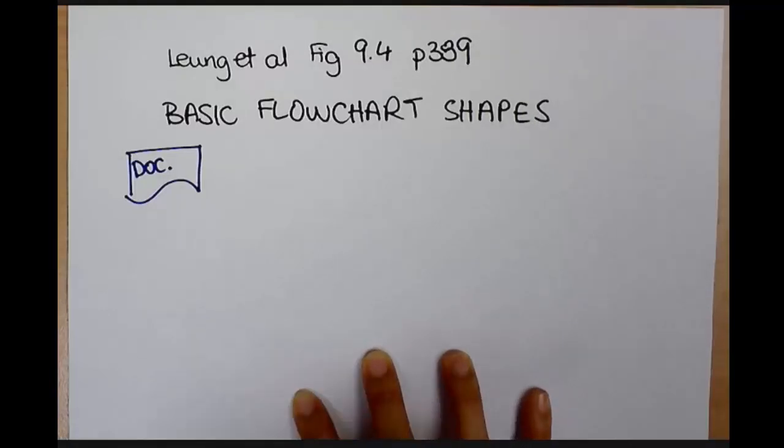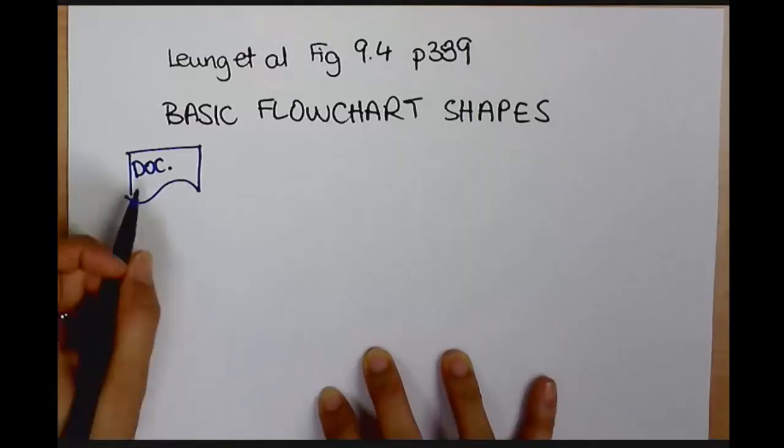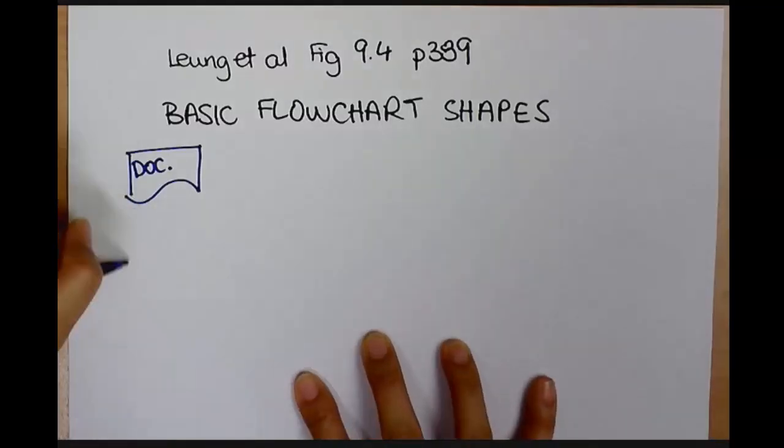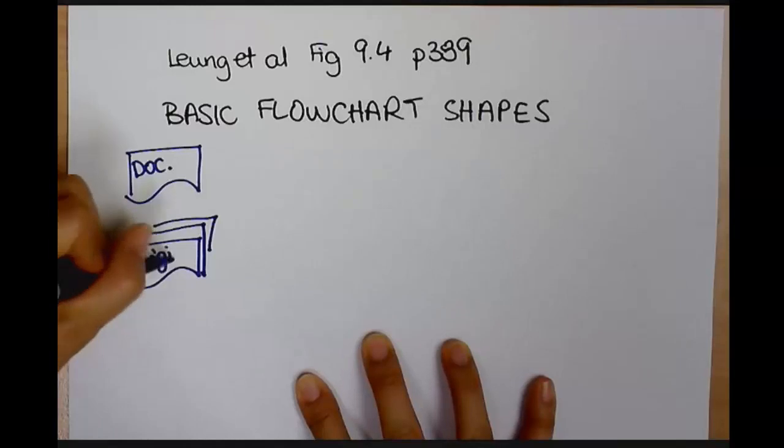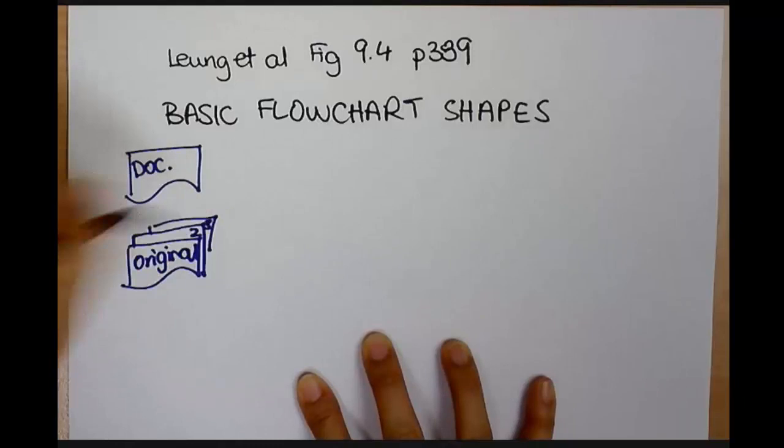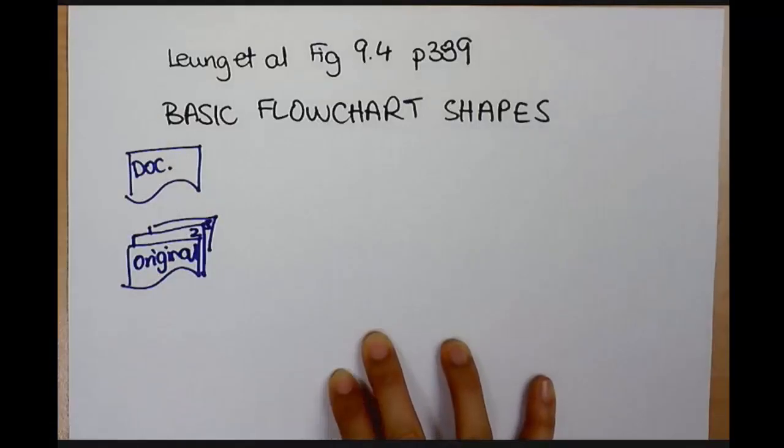And this is our document shape. So anything that's on paper, we use this little shape here as a document. Now if I have a document with multiple copies, I just need to draw them like this. And there's the original. Then we have our second copy and our third copy. Alright, so that's documents.